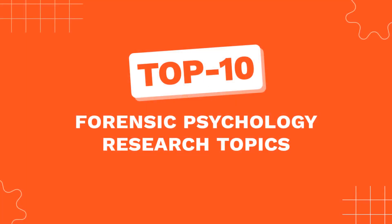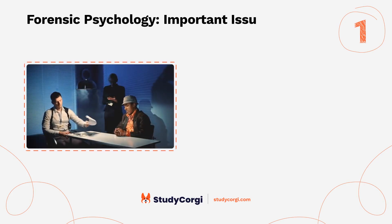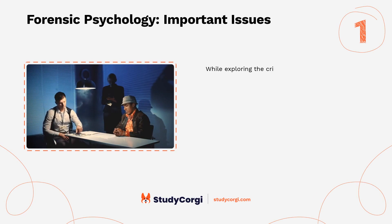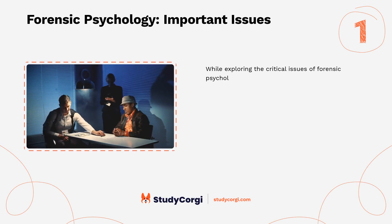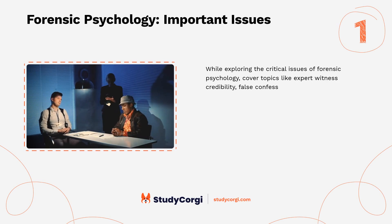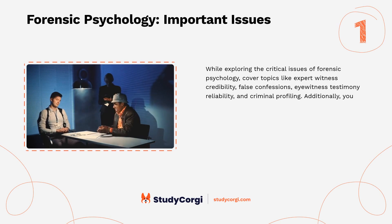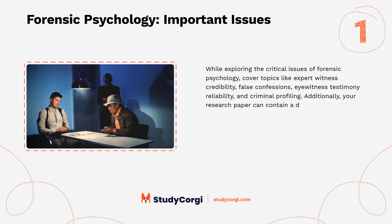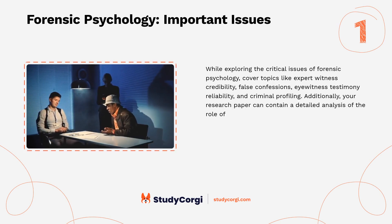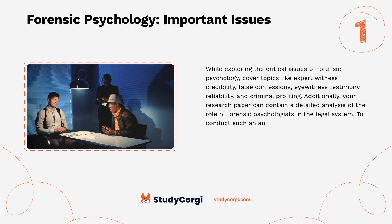Top 10 forensic psychology research topics. Forensic psychology important issues: while exploring the critical issues of forensic psychology, cover topics like expert witness credibility, false confessions, eyewitness testimony reliability, and criminal profiling. Additionally, your research paper can contain a detailed analysis of the role of forensic psychologists in the legal system. To conduct such an analysis correctly, refer to credible sources in the field.